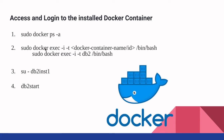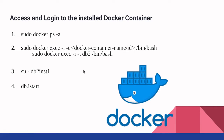The command is docker exec -i -t, and then you have to provide the Docker container name or the Docker container ID. The third command, which is su -db2inst1, is used to log in to the configured db2inst1 user. Then the final command, which is the db2start command, is used to start the DB2 server. Next, let's look at how these four commands are working.